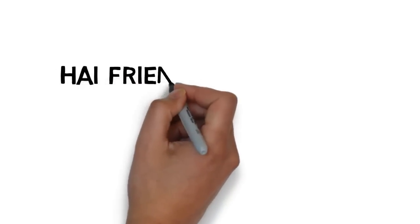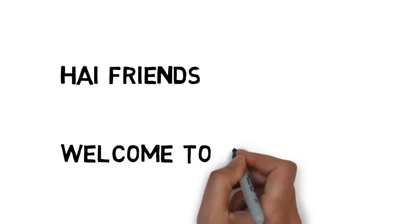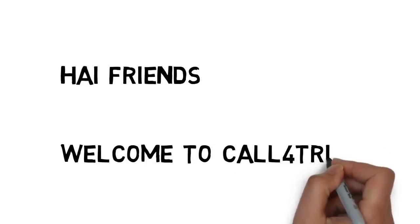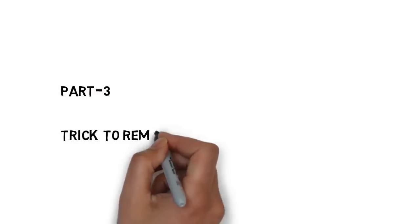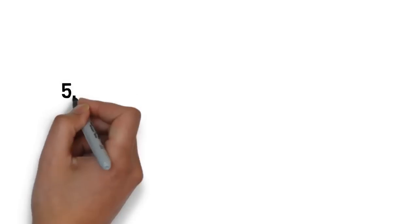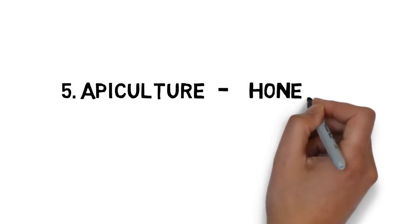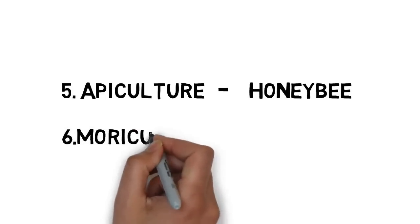Hi friends, welcome to Call for Trick. This is Part 3 on agriculture branches. Friends, today in the RRB exam, first day, they asked one question from this topic, so we can expect another question in upcoming shifts. Please concentrate. In my previous videos I have covered four branches. Friends, the fifth branch: apiculture is related to honeybee, and moriculture is related to mulberry.